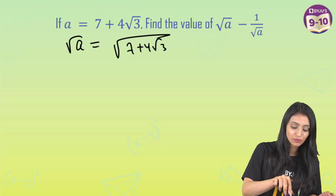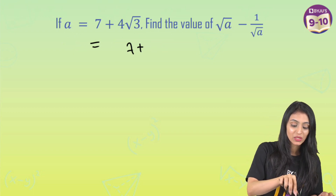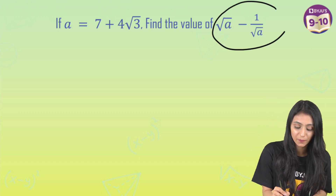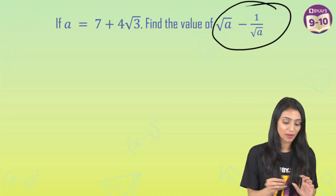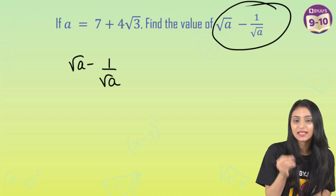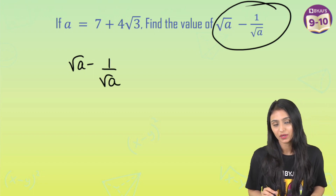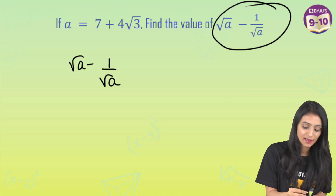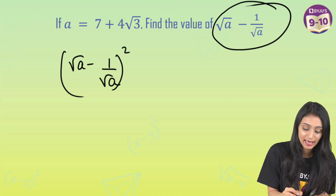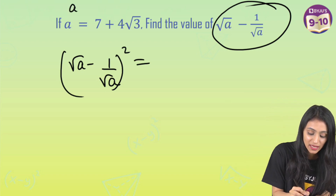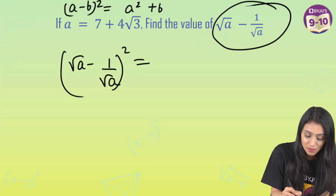This is complicated, so we don't have to do this here. The best way to approach this question is to start from root a minus 1 by root a. Let's try removing the square roots by taking the square of it. I know that (a minus b) whole square is a square plus b square minus 2ab.